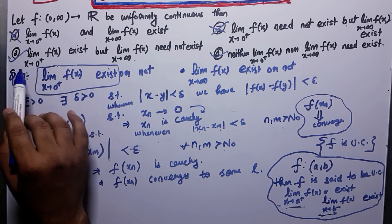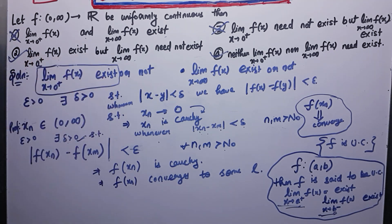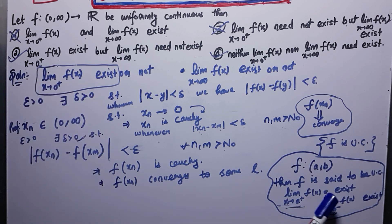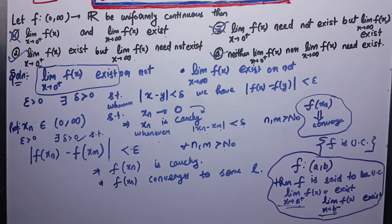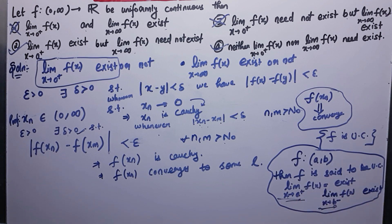Since I've proved that limit x→0+ exists, you can replace 0 with any endpoint a or b and the same proof goes through. This gives a general result: if f is uniformly continuous on an open interval (a, b) with a, b finite, and both endpoint limits exist, then f is uniformly continuous. This is a very important note for your exam while proving uniform continuity. Thank you guys.